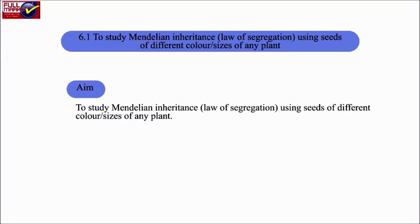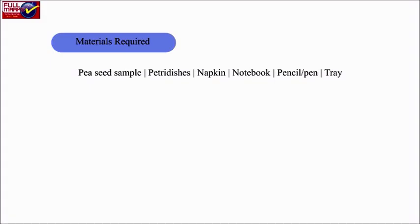To study Mendelian Inheritance Law of Segregation using seeds of different color or sizes of any plant. Materials Required: Pea seed sample, Petri dishes, Napkin, Notebook, Pencil or pen, and tray.